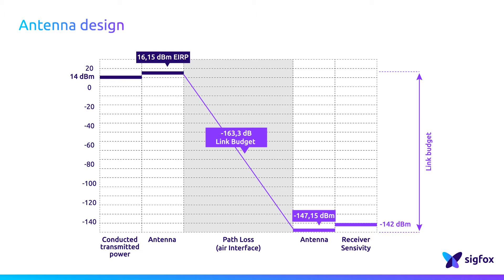This diagram shows a rough illustration of the link budget in ETSI-like regions. In an ideal situation, the device radiates up to 14 dB. At the base station, the antenna gain is 5 dB and the receiver sensitivity is minus 142 dB. The antenna gain adds 2 dB in this example, so the antenna gain can slightly increase the link budget.